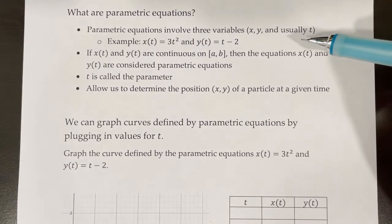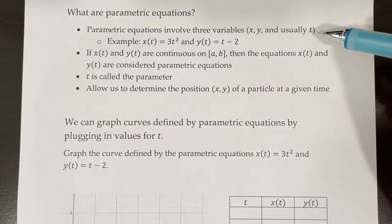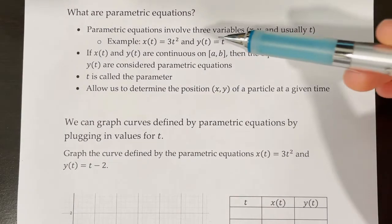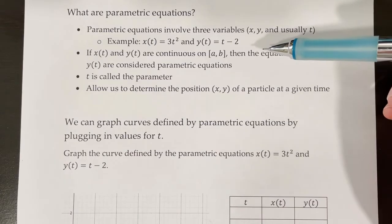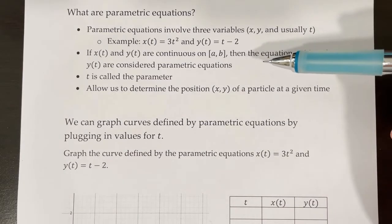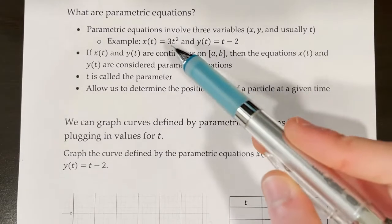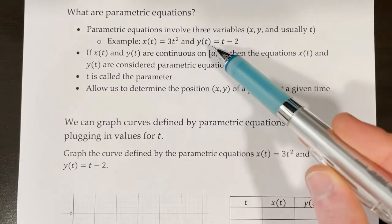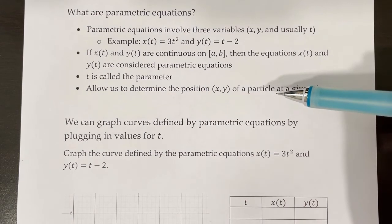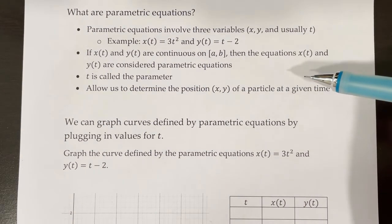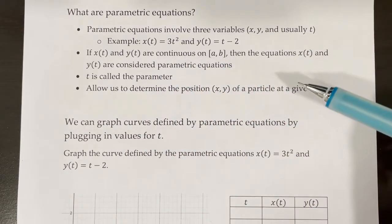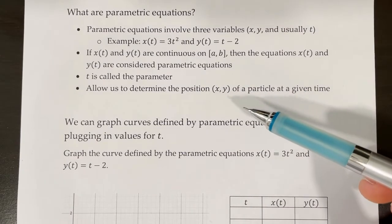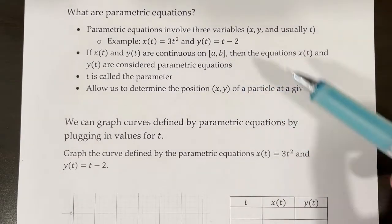Parametric equations involve three variables: x, y, and usually t as our third variable. For example, x(t) = 3t² and y(t) = t − 2. If we're given a value of t, say t = 2, we can figure out the x coordinate and y coordinate at t = 2. If x(t) and y(t) are both continuous on the closed interval from a to b, then those equations are our parametric equations, and t is called the parameter — the third variable used to calculate x and y.